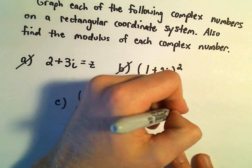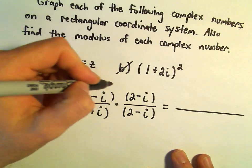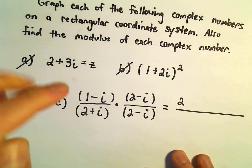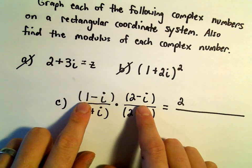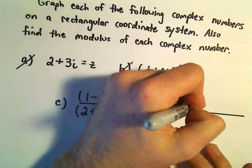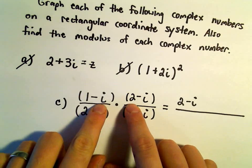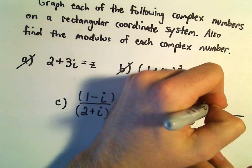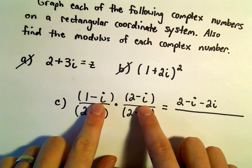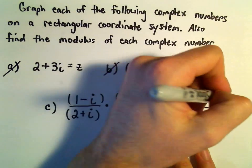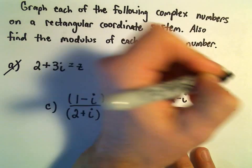So let's see, if we distribute things out, we'll get 1 times 2, which will be 2. So I'm working on the top, we'll get 1 times negative i, which will be negative i. We'll get a negative 2i. Then we have negative i and negative i, which is just going to give us a positive i squared.